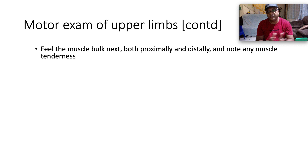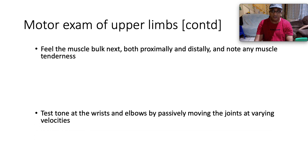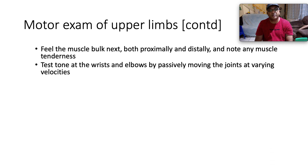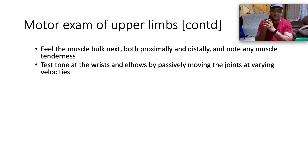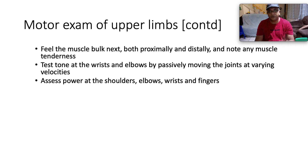After inspection, feel the muscle bulk both proximally and distally and note any muscle tenderness — watch out in cases of myositis. Test the tone at the wrists and elbows by passively moving the joint at varying velocities to assess resistance to movement. Also assess power at the shoulders, elbows, wrists, and fingers.